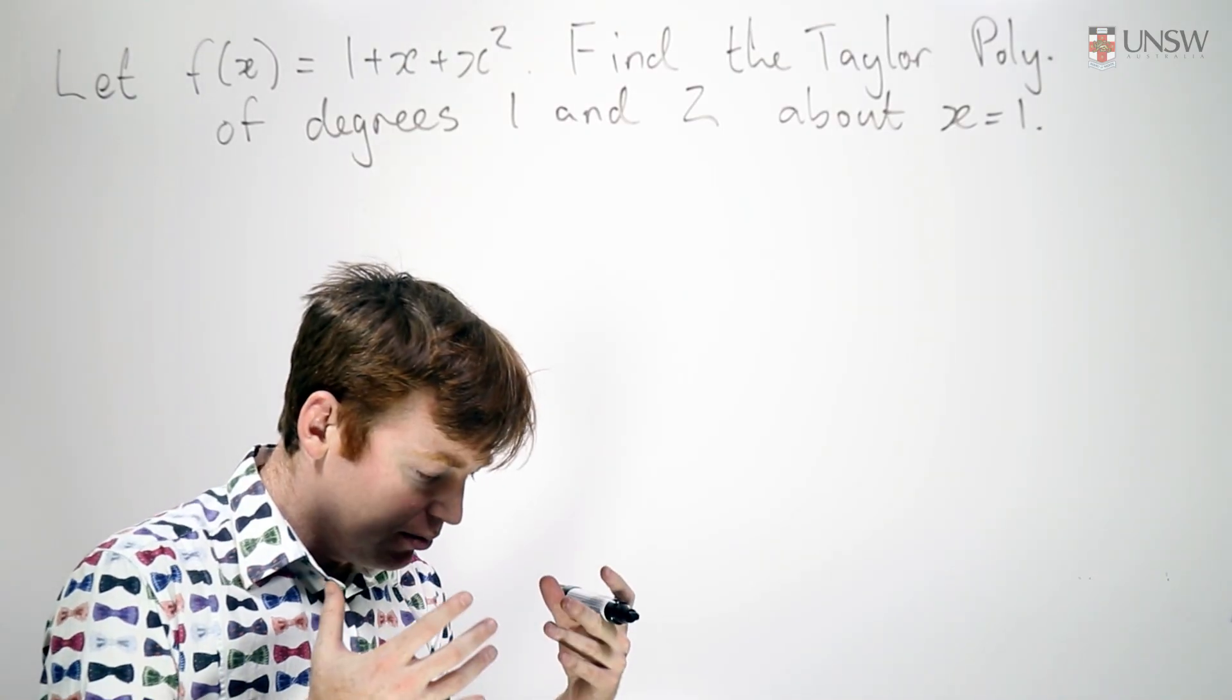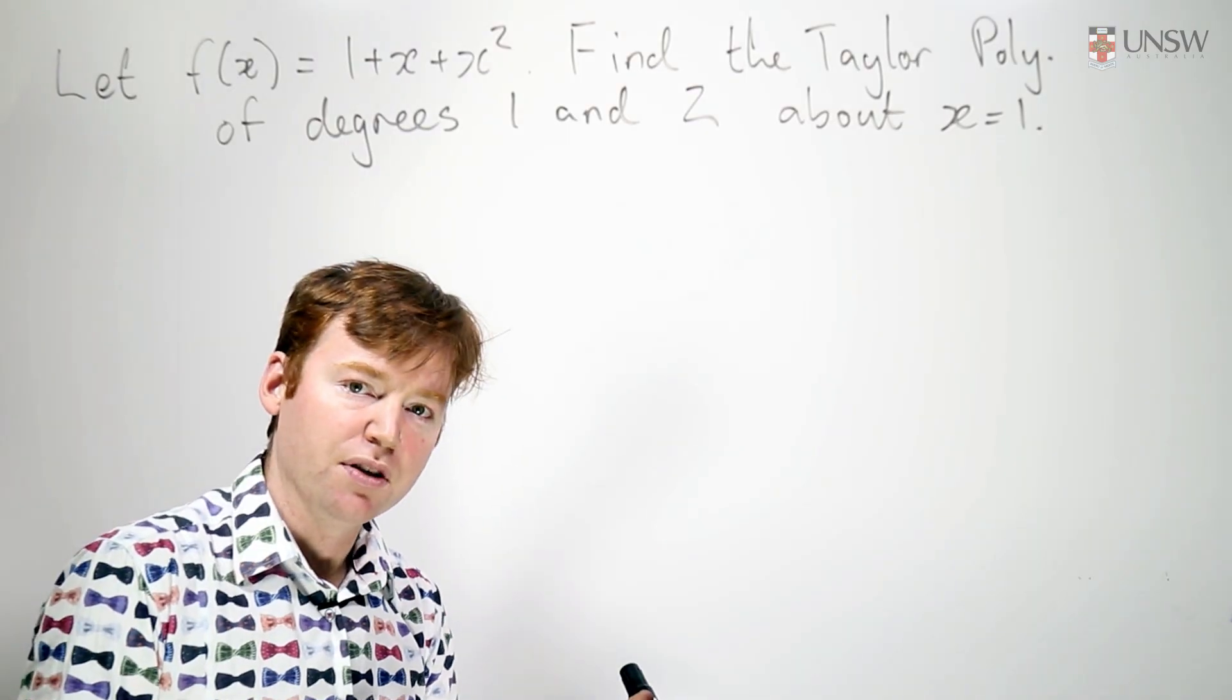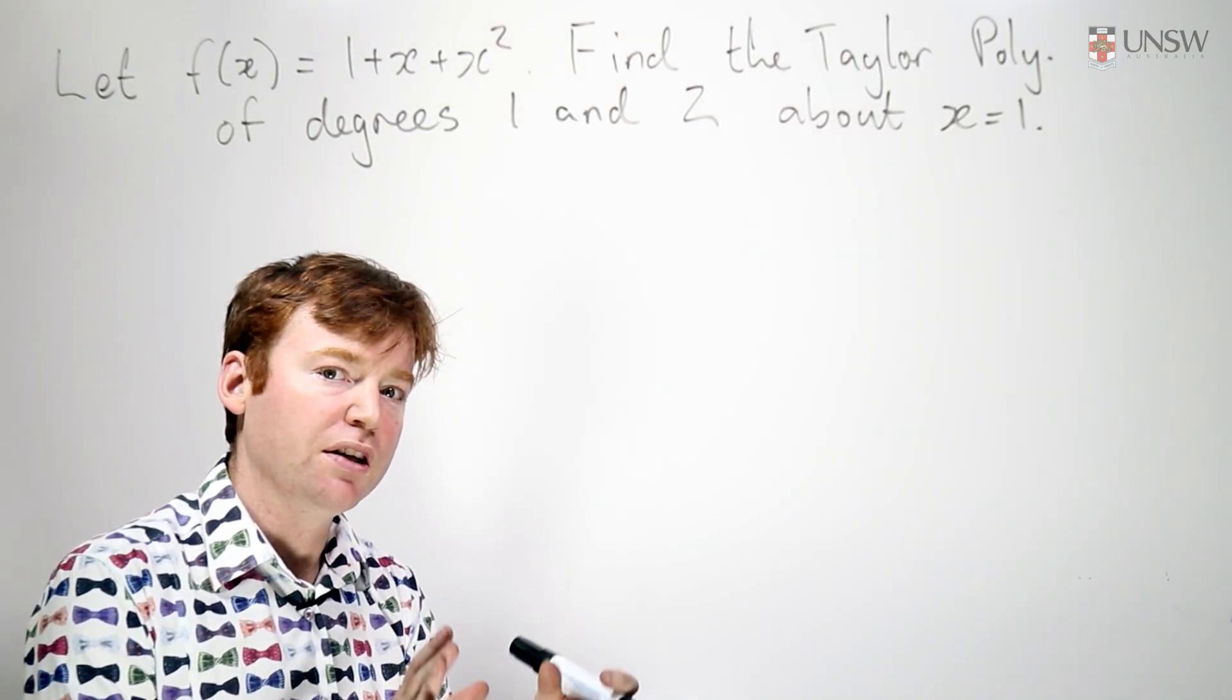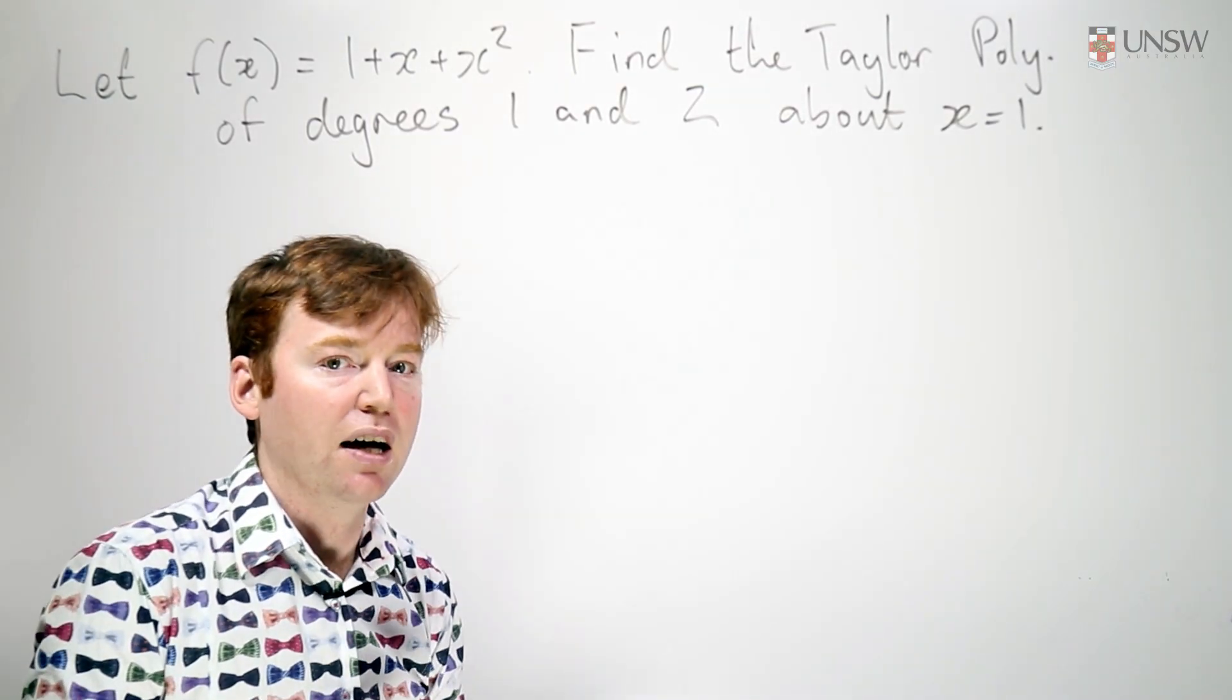I'll remind you that a Taylor polynomial to a function is a polynomial approximation to that function, but it's a polynomial expressed in powers of x minus the point you're taking the approximation at.